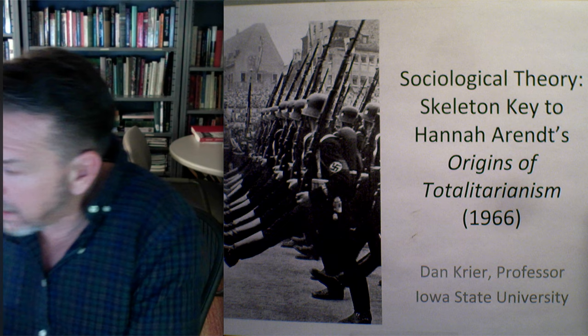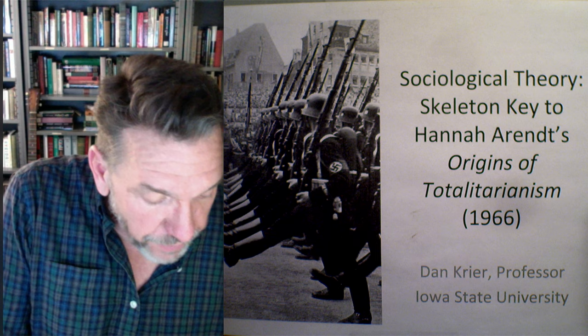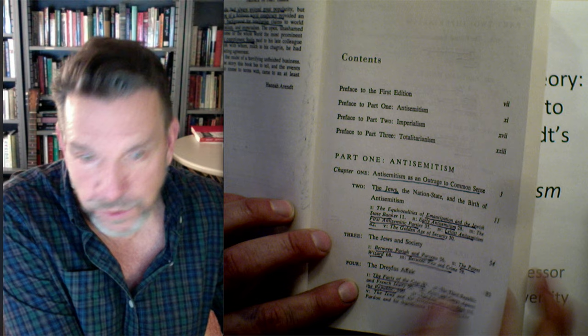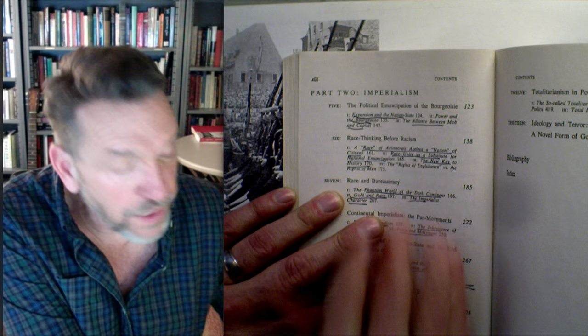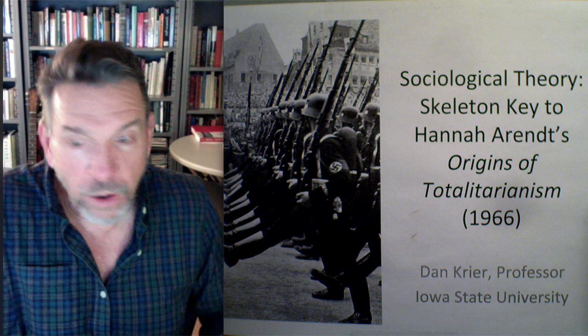Today we're going to look at the first part of the book. It's divided into three sections: part one is on antisemitism, which we'll cover today; the next video will cover imperialism; and the final section is on totalitarianism. All parts of the book are interrelated — she's specifying the genetic origins of the Holocaust and the Nazi regime as it devolved in the 1930s and 40s.